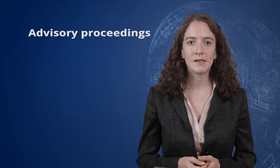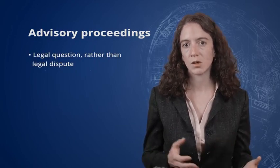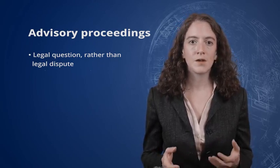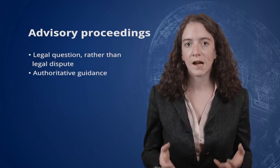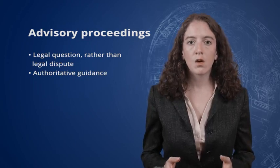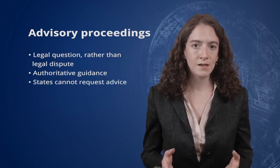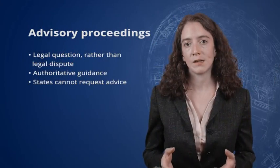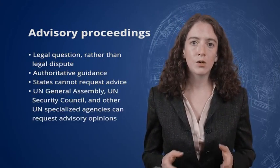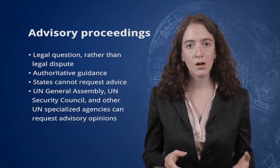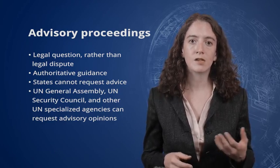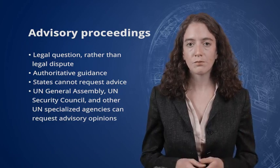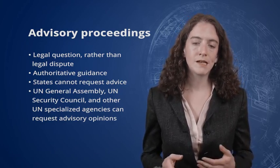Secondly, the ICJ also occasionally provides advice to UN bodies in what are called advisory proceedings. The court's advisory opinions concern a legal question rather than a legal dispute between two or more states. The court's advisory proceedings function as an opportunity for the court to provide authoritative guidance on a question about international law. According to the UN Charter, states themselves cannot ask the ICJ for advice, but the UN General Assembly and the UN Security Council can request advisory opinions on all sorts of issues. In addition, other organs of the UN and specialized agencies, like the World Health Organization, can request advisory opinions when the General Assembly gives them the authority to do so. But these requests have to relate to the mandate of the particular specialized agency.